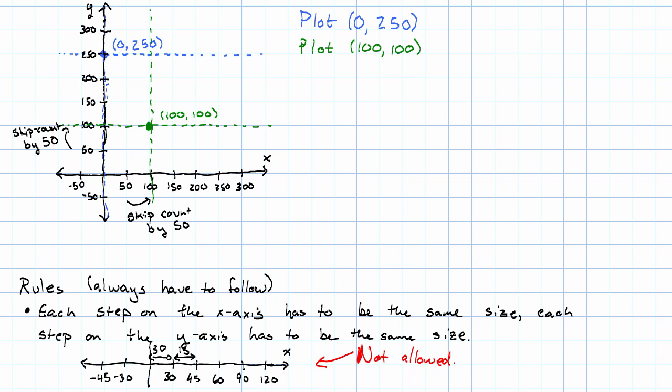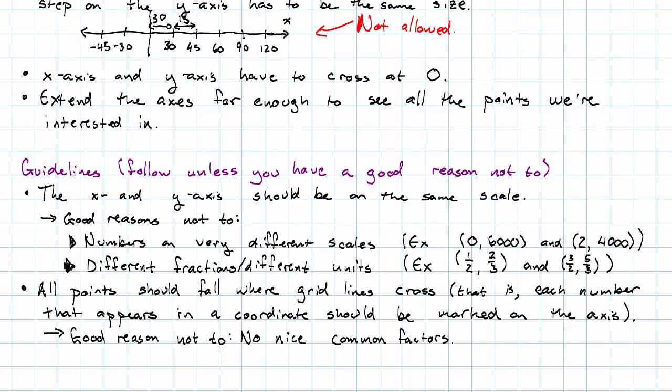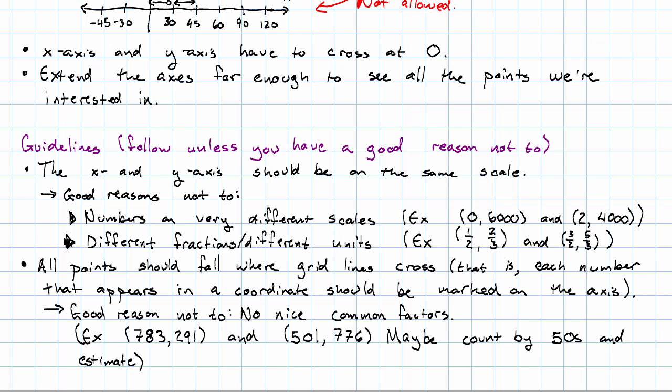Why would we make an exception to this? We might not want to do this if our numbers don't have any nice common factors. So for example, if I wanted to plot the points (783, 291) and (501, 776), I might just want to count by 50s and estimate where my points ought to be.